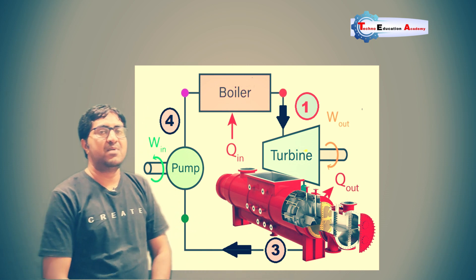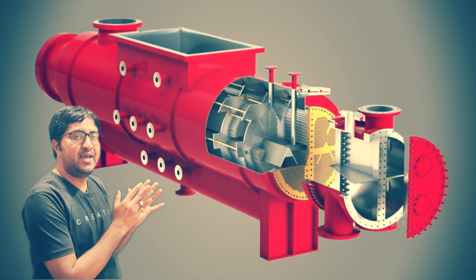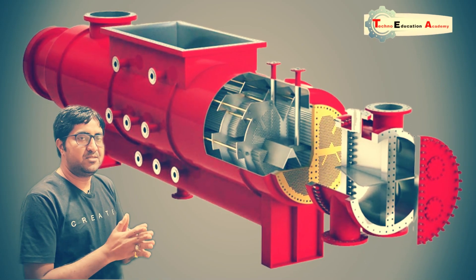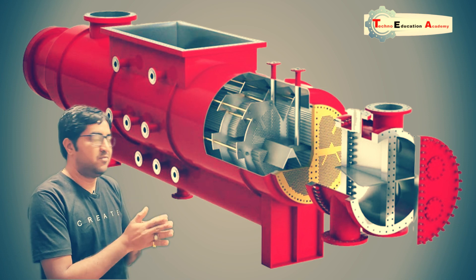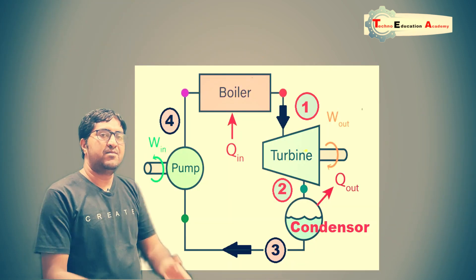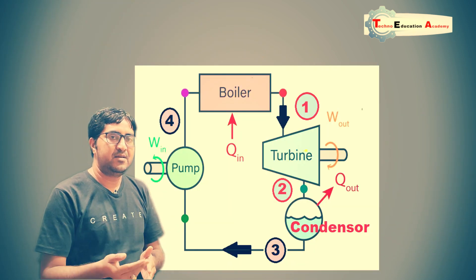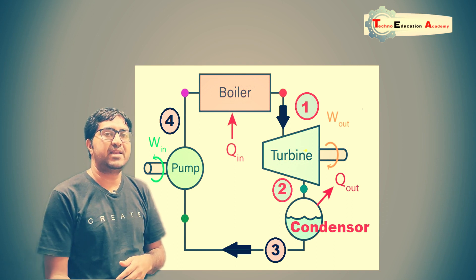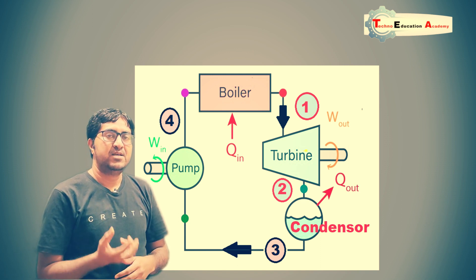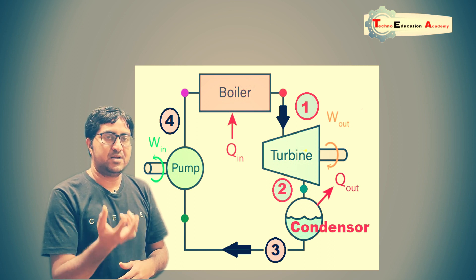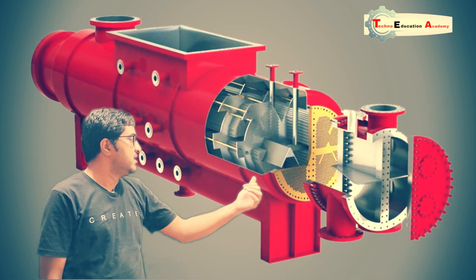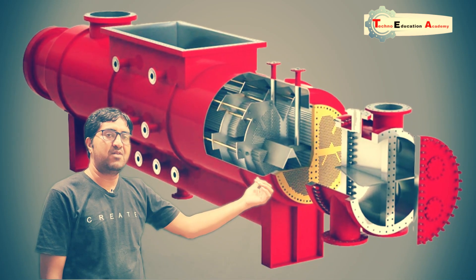The importance of the condenser is that a negative pressure, or vacuum, is maintained inside it. Vacuum means pressure below atmospheric pressure. This vacuum is needed because if air is present inside the condenser, it creates back pressure on the turbine blades, which reduces the work done by the turbine. So the first need of the condenser is to maintain vacuum continuously, 24 by 7.